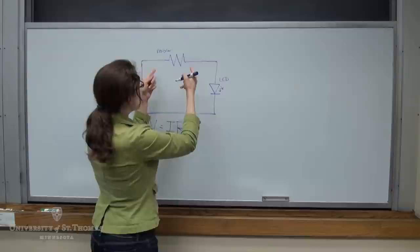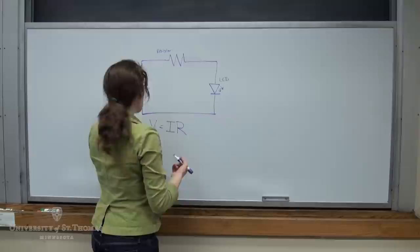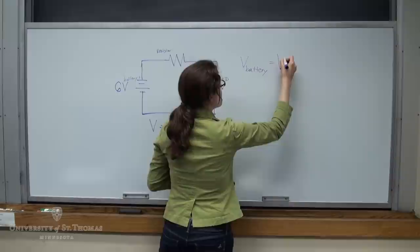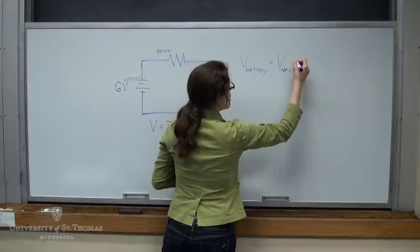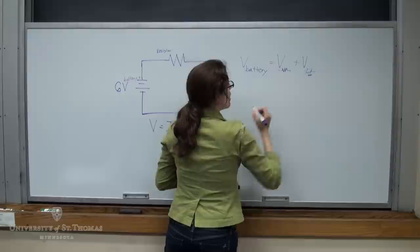So if we were to measure, with a multimeter, the voltage drop across the resistor, and the voltage drop across the LED, it's got to equal the 6 volts. So we'll say V battery has to be equal to the voltage across the resistor, I'll draw the little resistor symbol, plus the voltage drop across the LED.